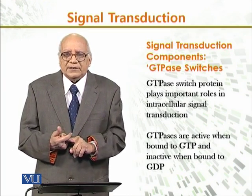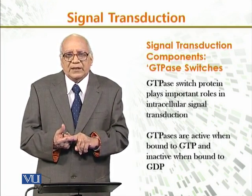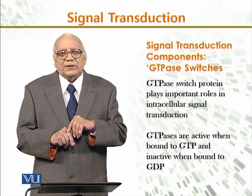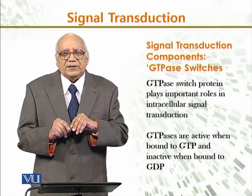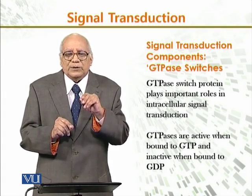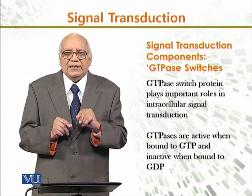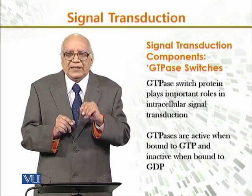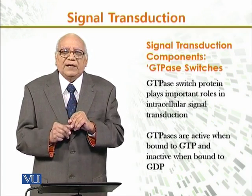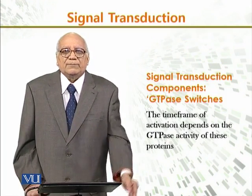GTPases are active when bound to GTP, and inactive when bound to GDP — that is, when the phosphate group is removed from them. So that is how they become active and how they become inactive: they become active when bound to GTP, and inactive when inorganic phosphate is removed from them.